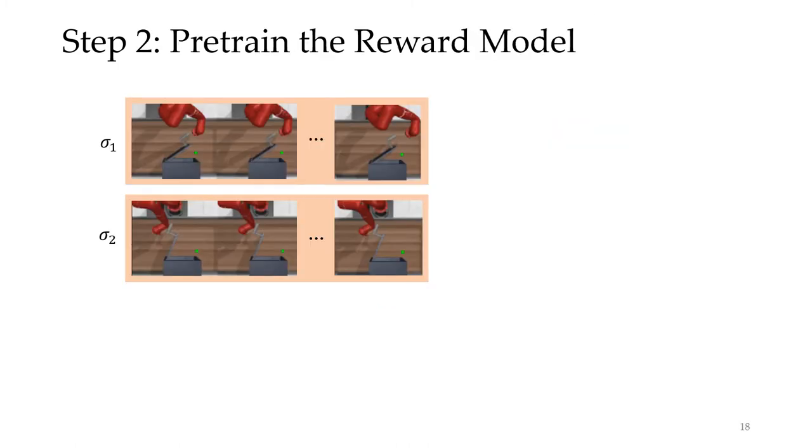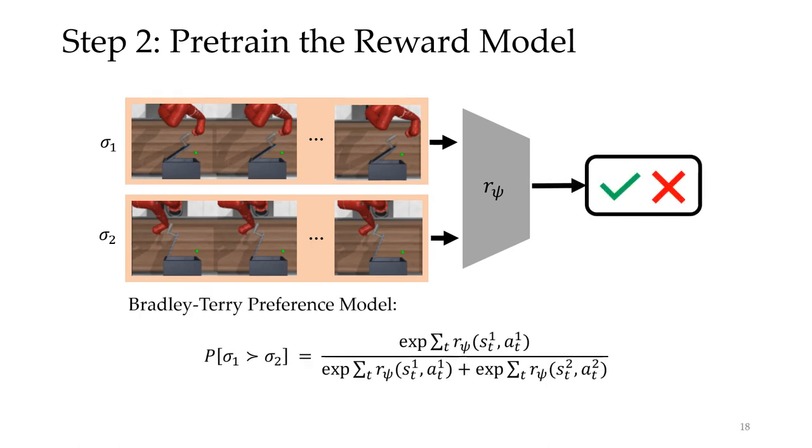Next, we need to train the reward function. We do this by taking the preference segments, here are the same ones from the last slide, and train a classifier to predict which segment was preferred. Specifically, this is done using a Bradley-Terry preference model, where the logits are given by the sum of predicted rewards over each segment. Then, the neural network is trained using standard binary cross-entropy loss.